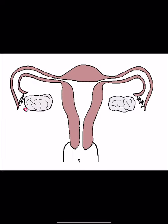After deposition of the sperm into the genital tract of the female, they have to migrate through the cervical canal, along the uterine wall, until they reach the fallopian tube, where at the ampullary portion they fertilize the oocyte.